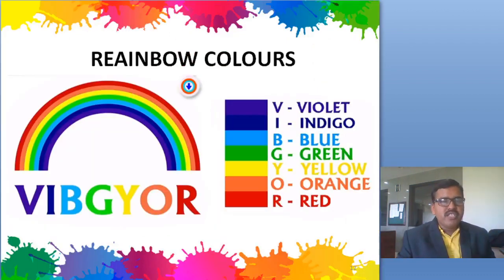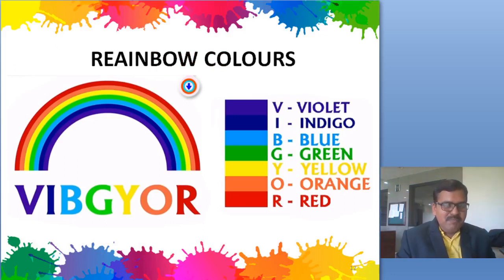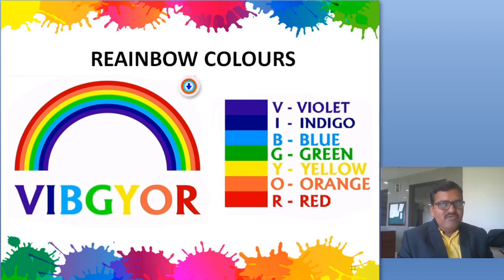Children, do you know the colors of the rainbow? In front of you on the display, I have shown a rainbow — what we call a rainbow. The colors of the rainbow are: violet, indigo, blue, green, yellow, orange, and red.